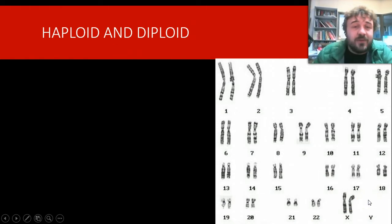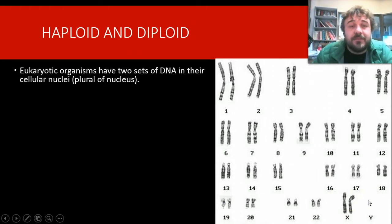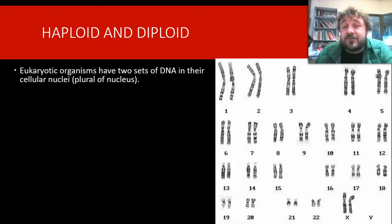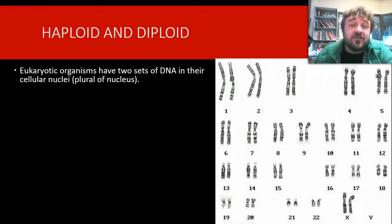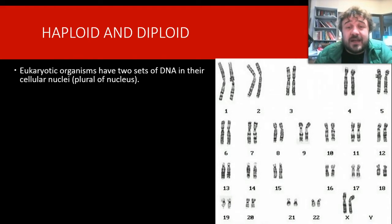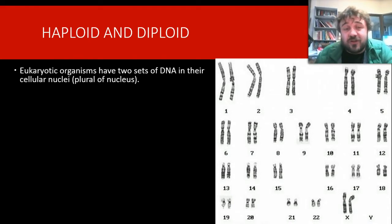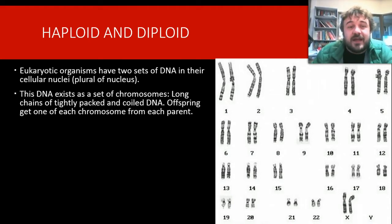A Y chromosome is what makes you male. Eukaryotic organisms have two sets of DNA essentially in their cellular nuclei — so in each nucleus there are two sets of DNA, with the exception of something called germ cells, which we'll get into. But most of your cells have two sets of DNA.